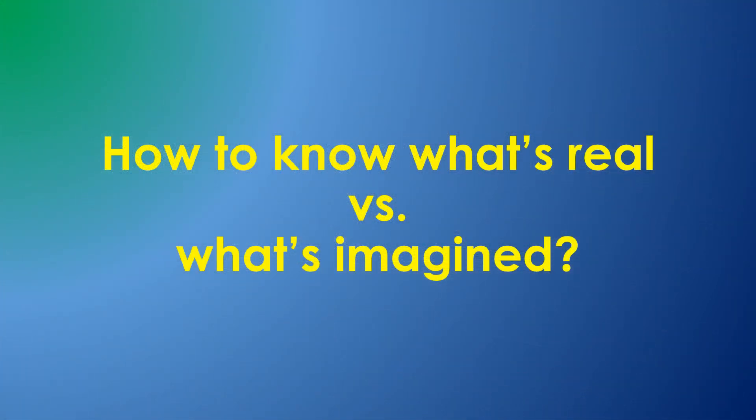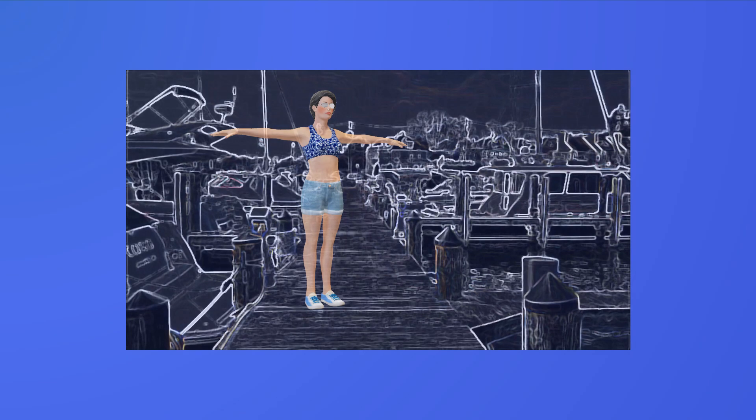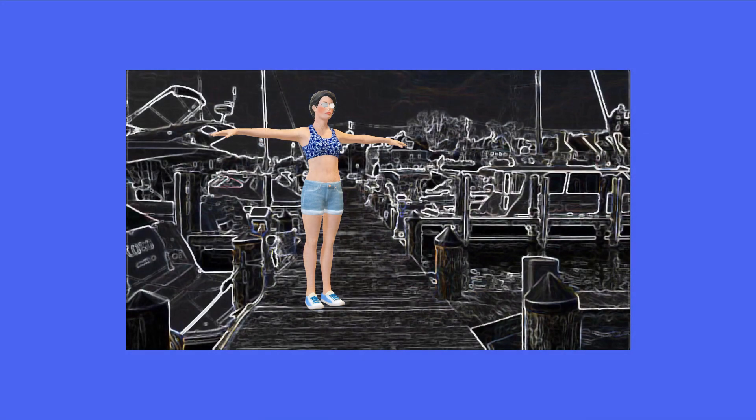You know which objects in your 3D reality model come from your senses, and which are only imagined from your knowledge base. Even with your eyes closed, you know about your surroundings. If you imagine a person with you, you know the difference between your imagination and your remembered immediate reality.